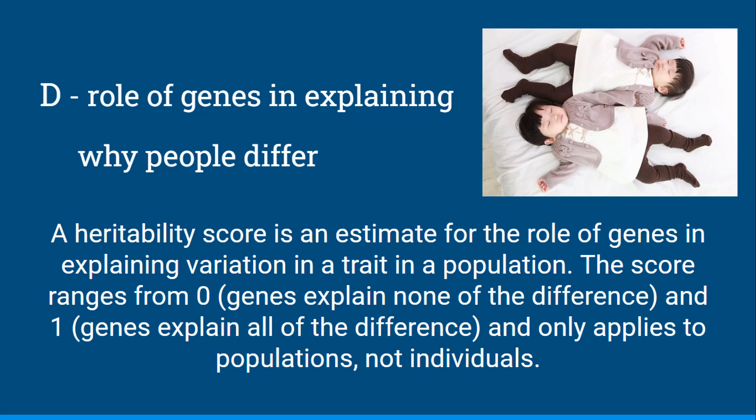A heritability score is an estimate for the role of genes in explaining variation in a trait in a population. People differ in the population for some trait, and we want to estimate how much of those differences are due to the fact that people have different genes. The heritability score ranges from 0 — meaning genes don't explain any of those differences — to a maximum of 1, meaning genes are the sole explanation. It's important to remember that because this is about differences between people, it can only be applied to populations, not individuals.